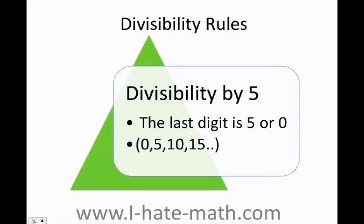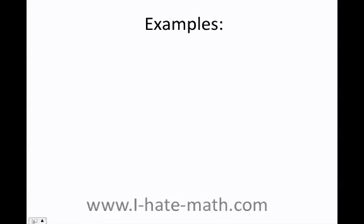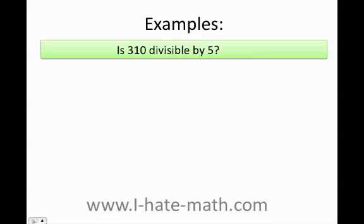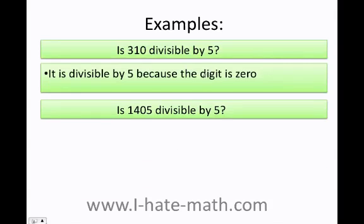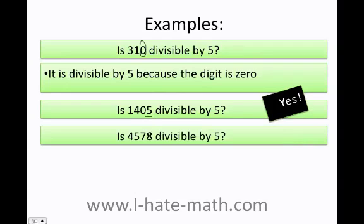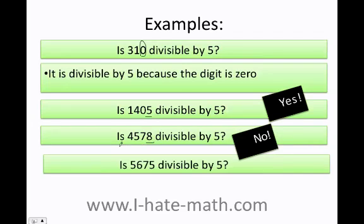Divisibility by 5 is one of the most important rules and it's actually the easiest one. You just have to look at the last digit — if it's 5 or 0, yes, it's divisible by 5. Is 310 divisible by 5? Yes, because the last digit is 0. The next examples are yes, then no, and yes. Let's move on.